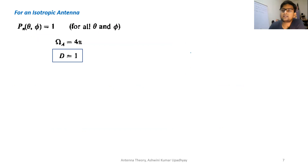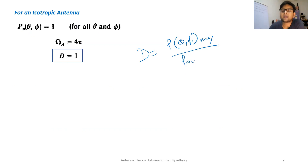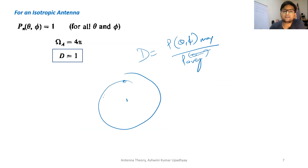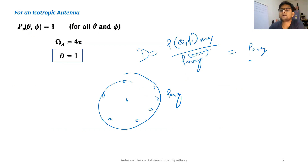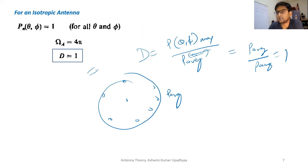For an isotropic antenna, what will be the directivity? Directivity is maximum power density divided by average power density. For an isotropic radiator, power density is exactly the same in all directions, which is equal to P_average. So directivity becomes P_average / P_average = 1. The directivity of an isotropic antenna is always 1.